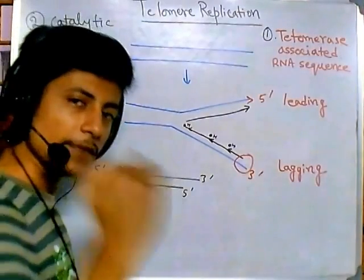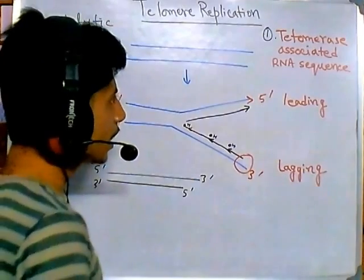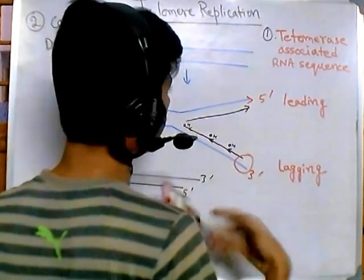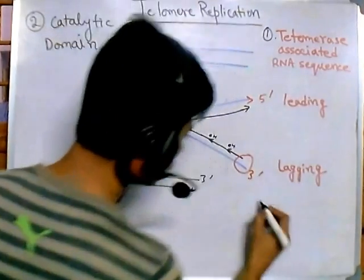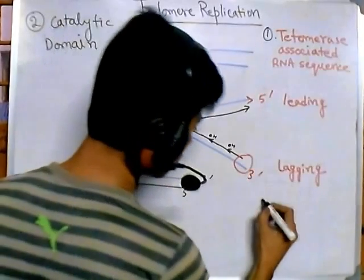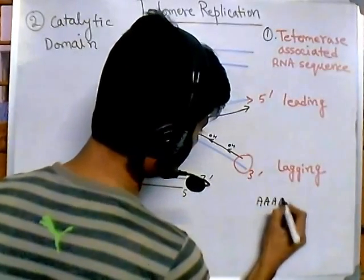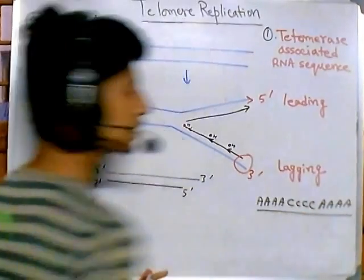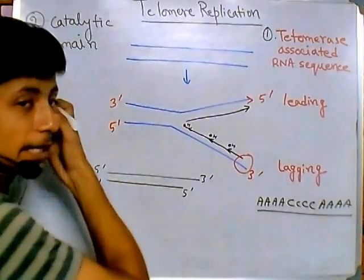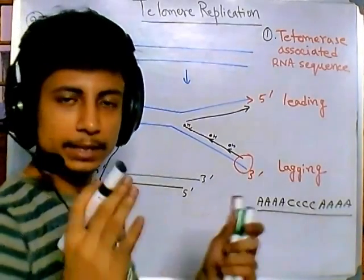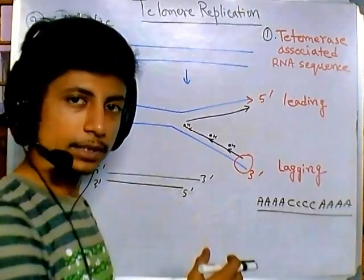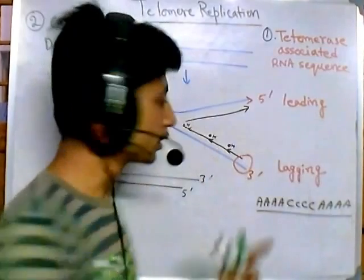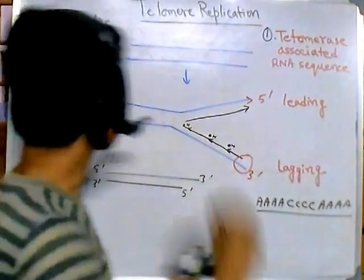The telomerase-associated RNA sequence carries a repeated sequence — adenine and cytosine repeats. At the end of the sequence, telomerase carries four adenine residues, four cytosine residues, then four adenine again, and so on. It also has a catalytic domain that can polymerize nucleotides. So telomerase carries its own template and uses its catalytic domain for polymerization.